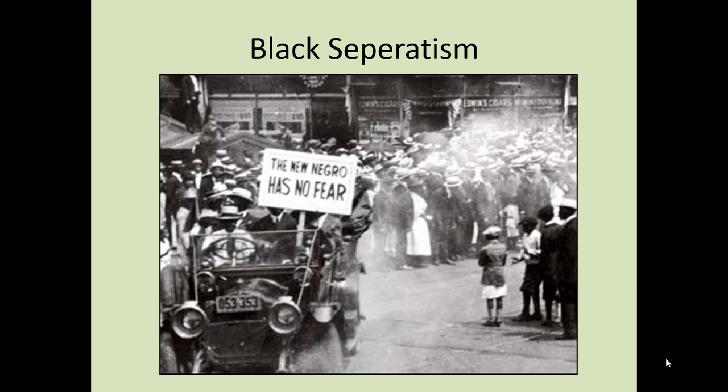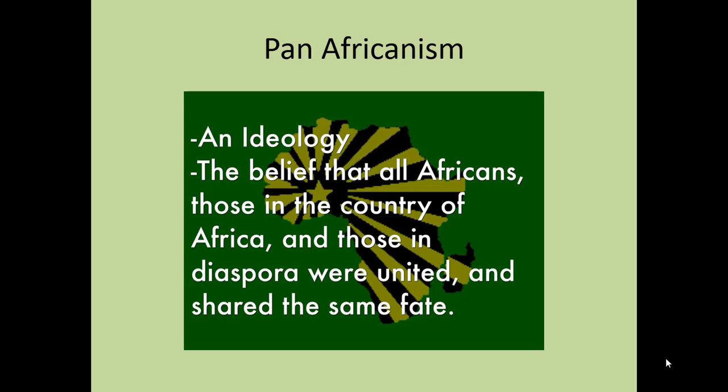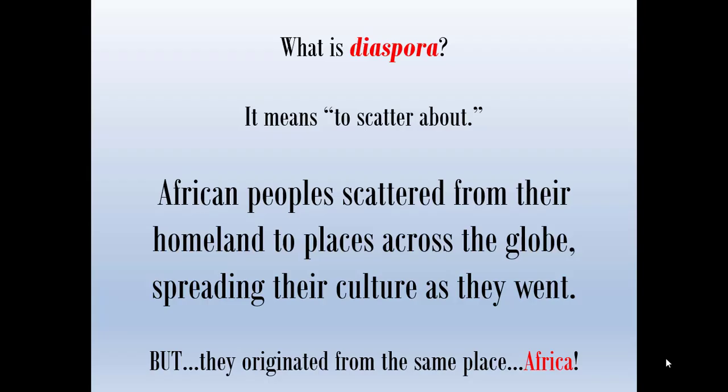Garvey also promotes pan-Africanism - the belief that all Africans, those in the country of Africa and those in the diaspora, were united and shared the same fate. The idea that African Americans have a common heritage and destiny and should cooperate and pursue political action among themselves. Garvey understood the power of politics to gain power. The word diaspora means to scatter about - in the case of African Americans, African people scattered from their homeland to places across the globe, spreading their culture as they went. In this case, they didn't scatter because they wanted to; they were kidnapped and forced to. But Garvey's point is they originated from the same place: Africa. That's your roots.